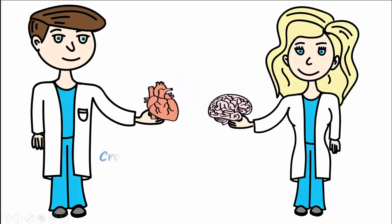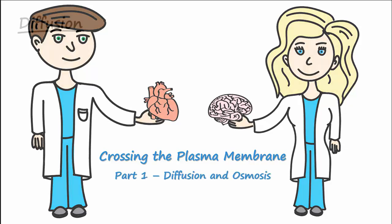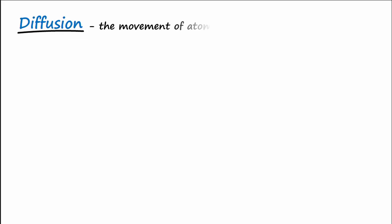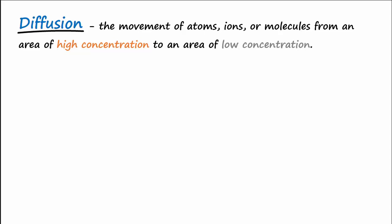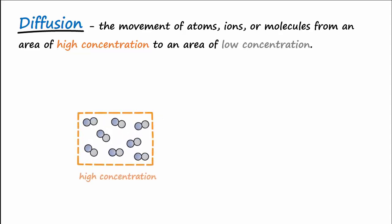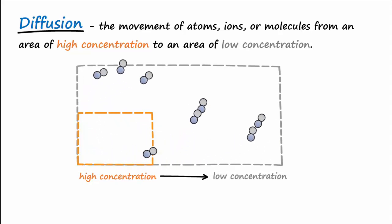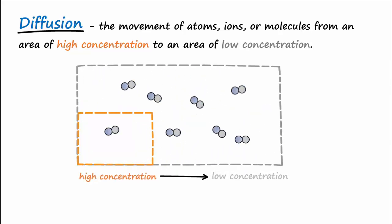Let's begin our discussion of the plasma membrane by talking about diffusion and osmosis. Diffusion is the movement of atoms, ions, or molecules from an area of high concentration to an area of low concentration. Due to the constant random motion of ions and molecules, chances are always greater that particles will move from a region of higher concentration to a region of lower concentration when they are in solution. Going from high to low is also termed going down a concentration gradient.